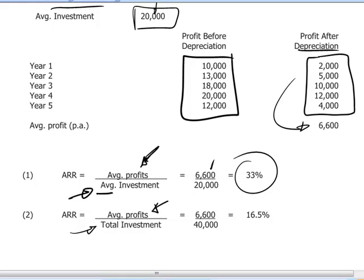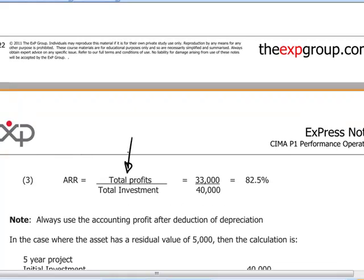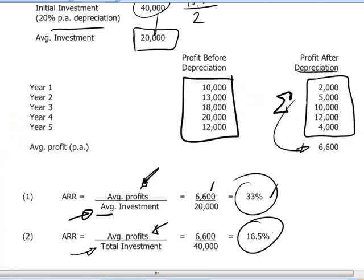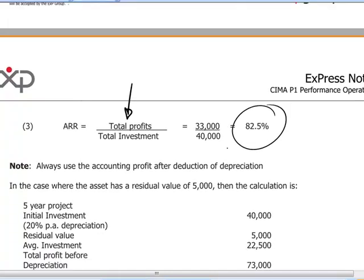If we use the total investment in the denominator, the ARR calculation will be half of the 33%. So it all turns on definitions — just keep the definitions straight. There is in fact a third way of calculating the accounting rate of return where we don't average out the profits but simply take the sum total of profits. As shown here, that's $33,000 — the sigma of all these profits — and $33,000 divided by $40,000 gives us 82.5%. Regardless of which method a company prefers to use, as long as it's using the same definition consistently, we can look at the ARR in terms of trend to see whether it's improving or not.